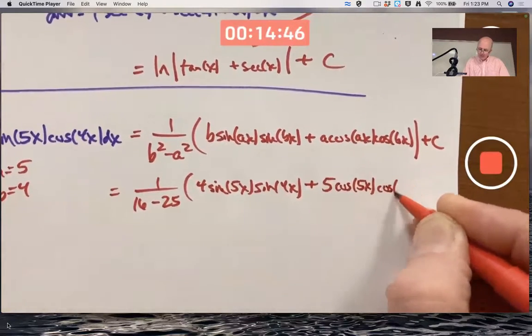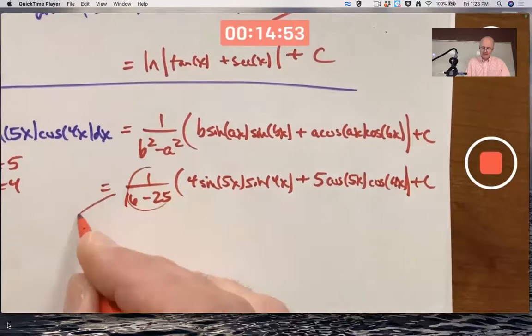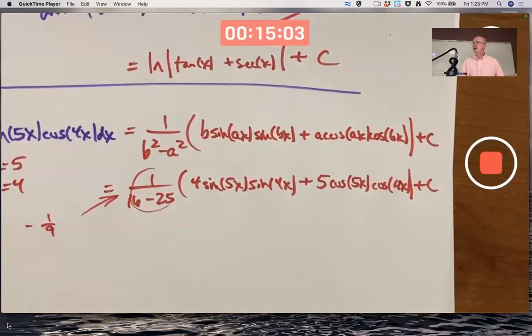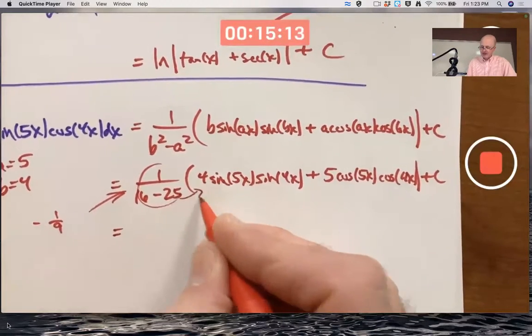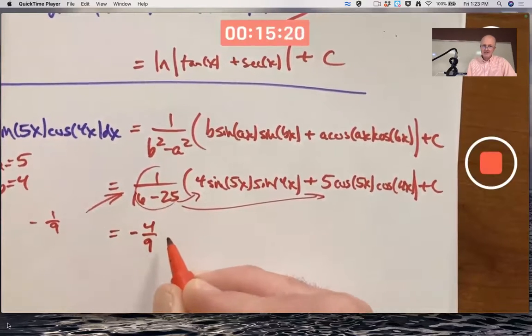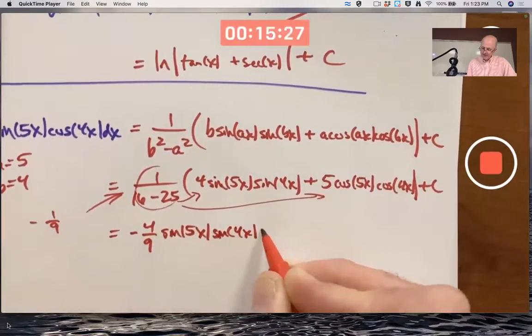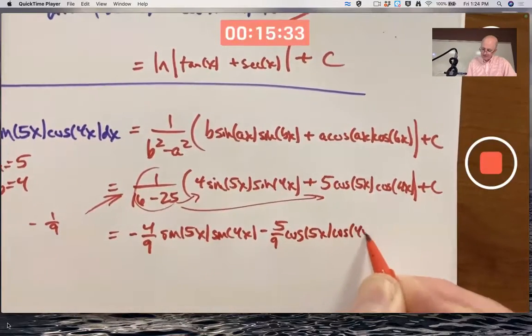And then it probably is worth going ahead and simplifying a little bit. That's the same as negative one ninth, right? And by the way, when you do these problems, that's from section 7.3. Do use the table in the back of the book. That's what they want you to do. And for the grader's sake, so that they see the same answer, go ahead and use those tables. Distribute the negative one ninth through the parentheses. 4 times negative one ninth is negative four ninths. So I get negative four ninths sine 5x sine 4x, and then minus 5 ninths cos 5x cos 4x plus c.